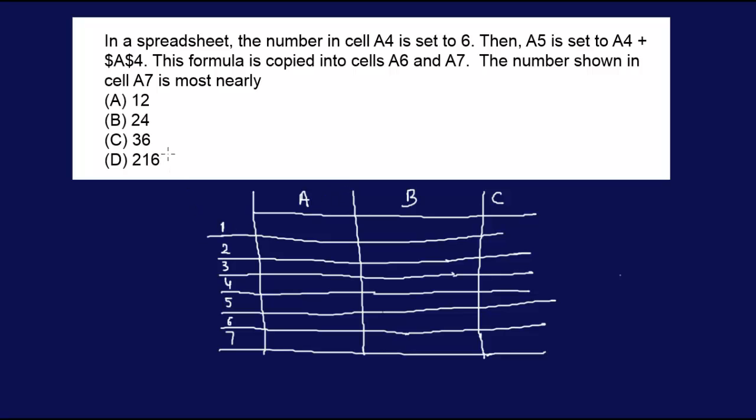So what do we have? We have A5 is A4 plus absolute $A$4. Remember, when you have this absolute designator, it means that whatever value you had there, it remains unchanged.